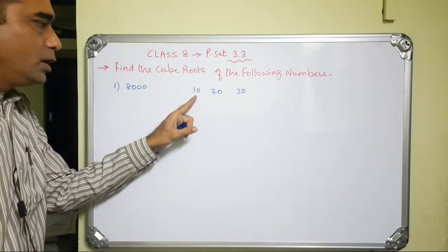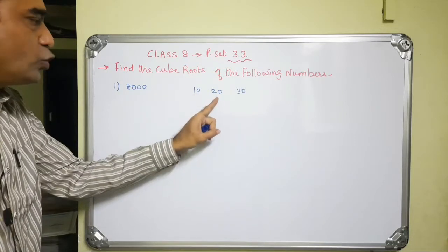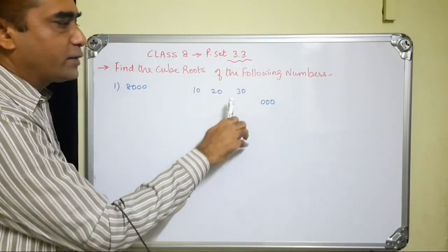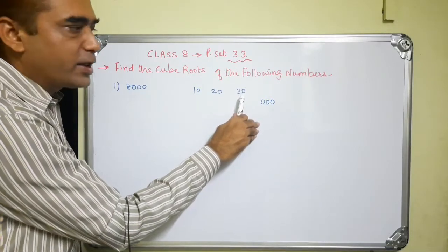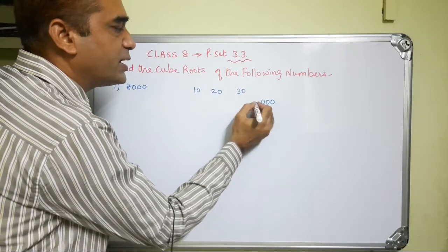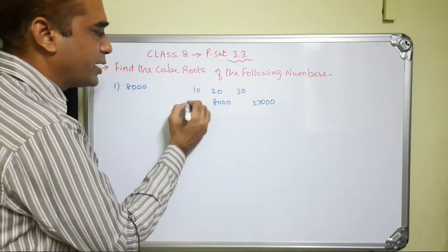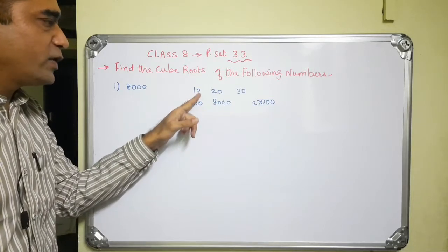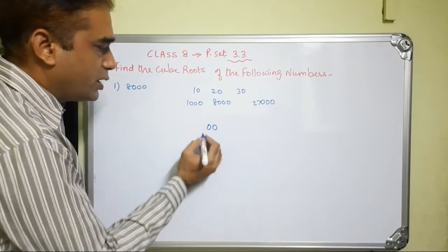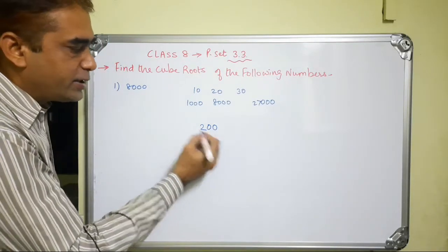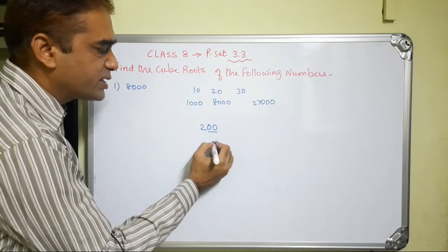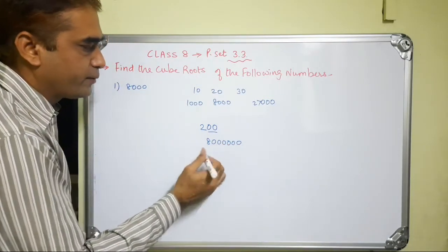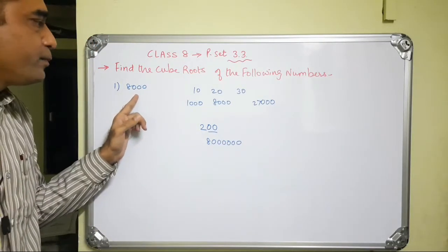We know that the cube of 10 is 1000 and the cube of 20 is 8000. The number of zeros gets multiplied by 3 in the cube — if there is 1 zero, there will be 3 zeros in the cube; if there are 2 zeros, there will be 6 zeros in the cube. Since 2 cubed is 8 and 20 cubed is 8000, the cube root of 8000 is 20.